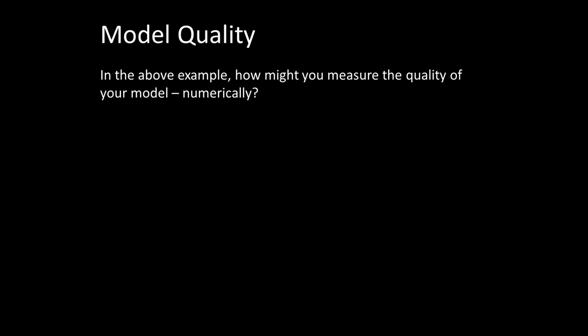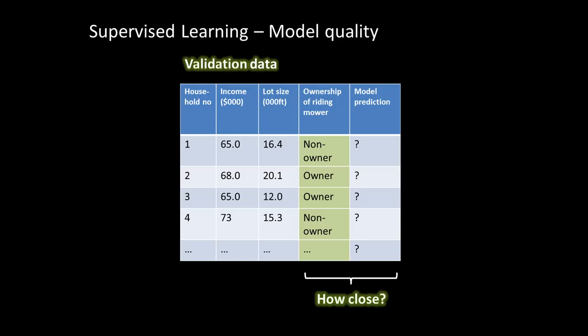So this is a broad idea of supervised learning where we use partitions. In the above example we've talked about an approach to identifying the quality of the model, but we're not just saying 'it's a nice model.' We want actual numbers — so how might you measure the quality of your model numerically? We've got real information about who are the owners or not, and we've got the model prediction.